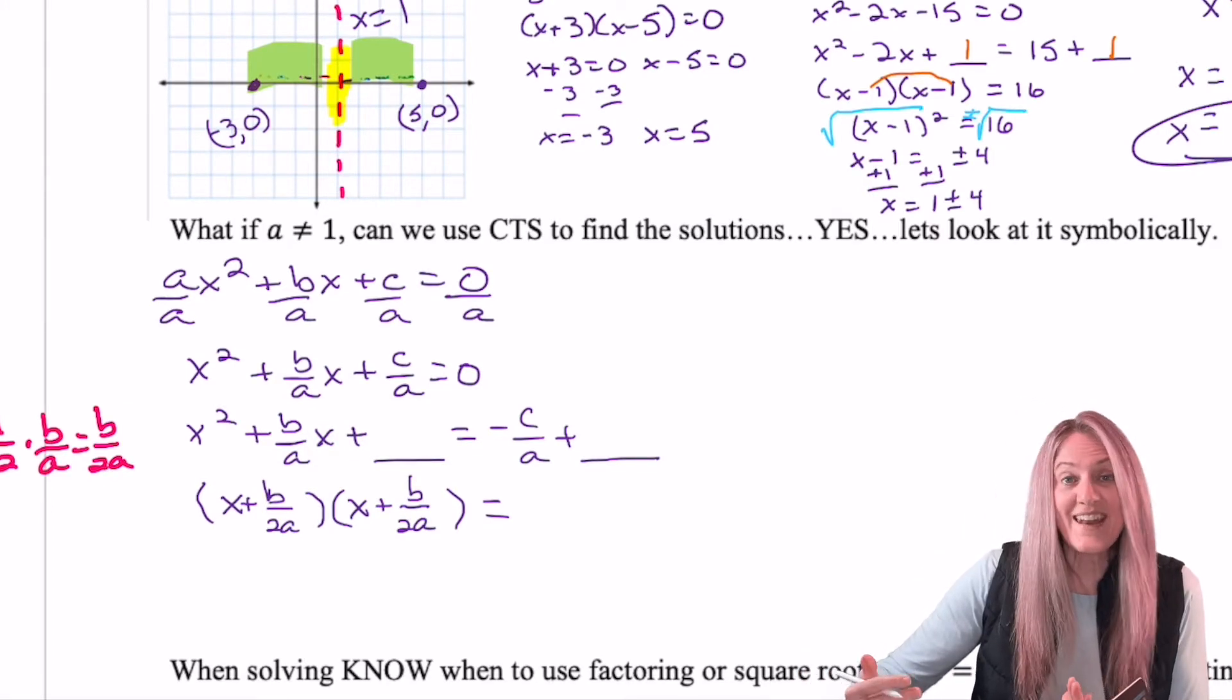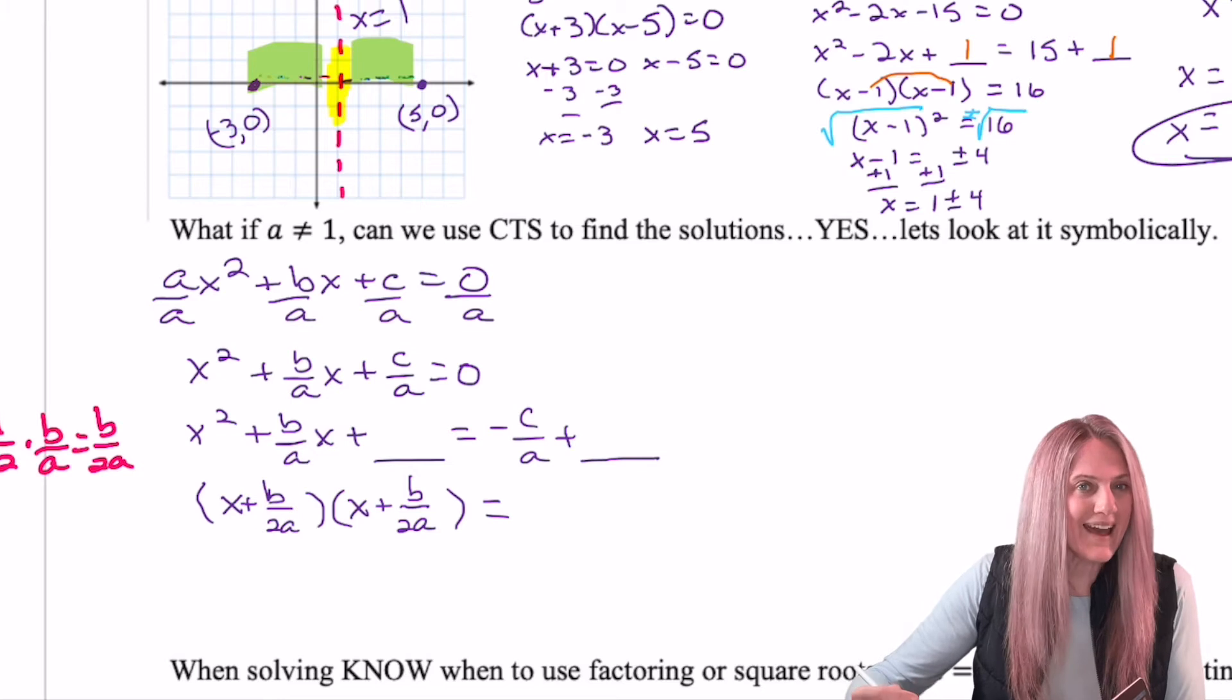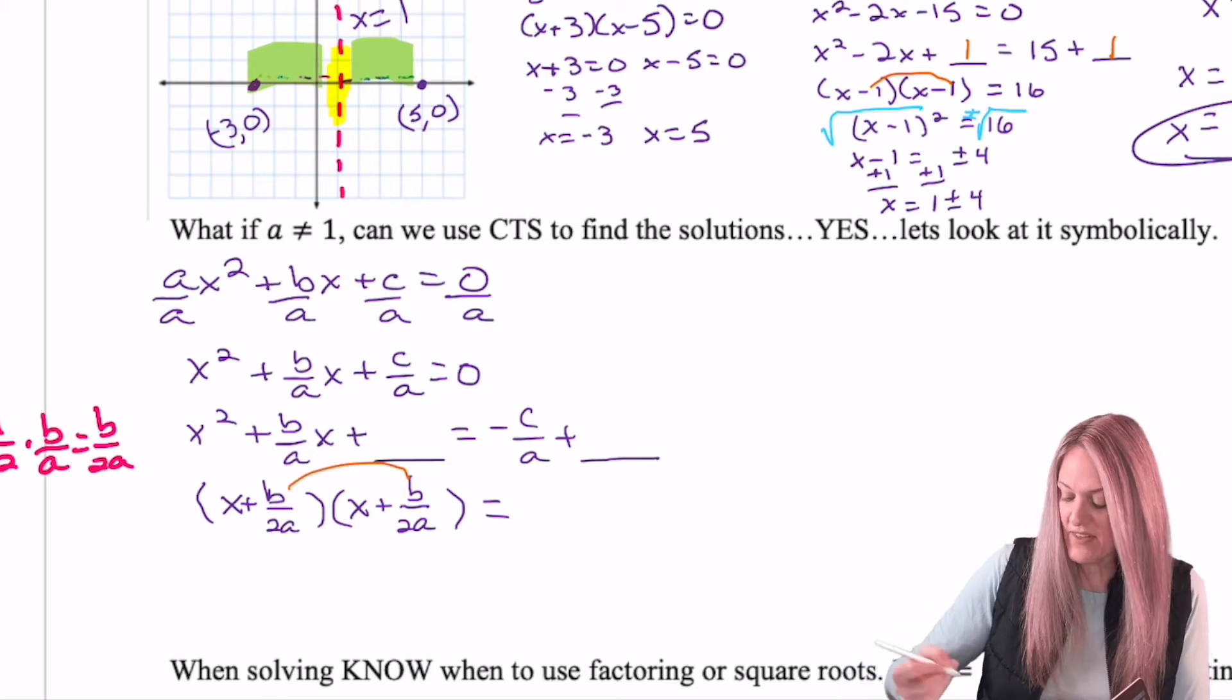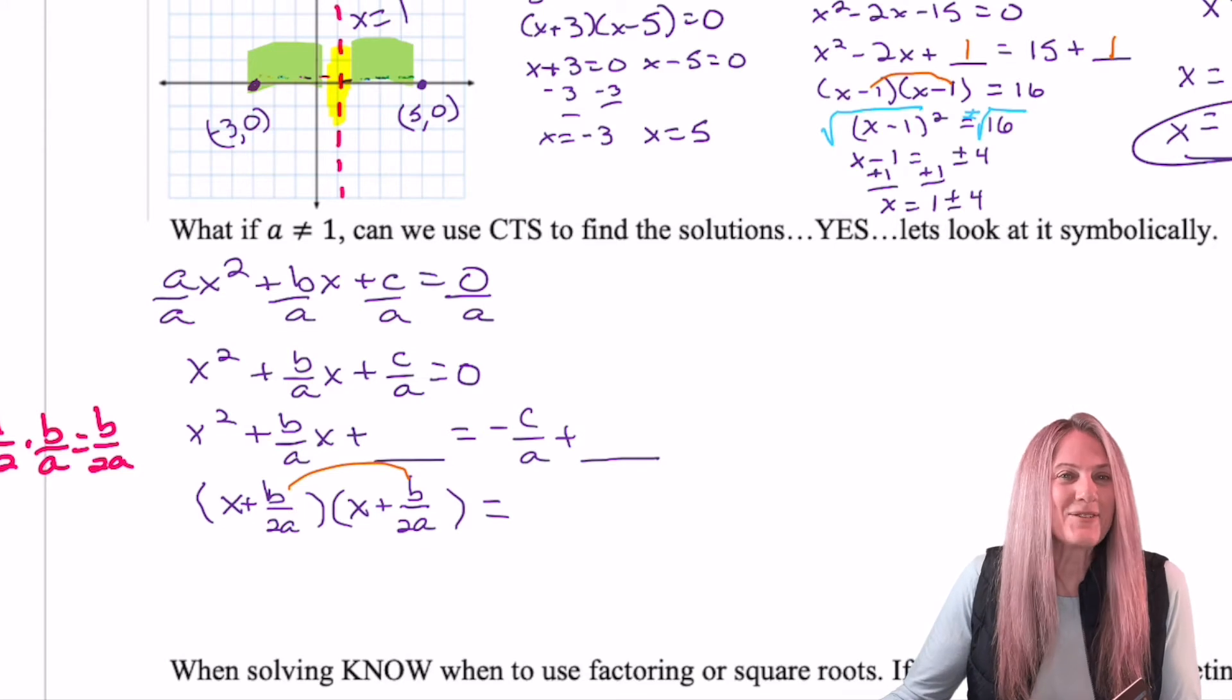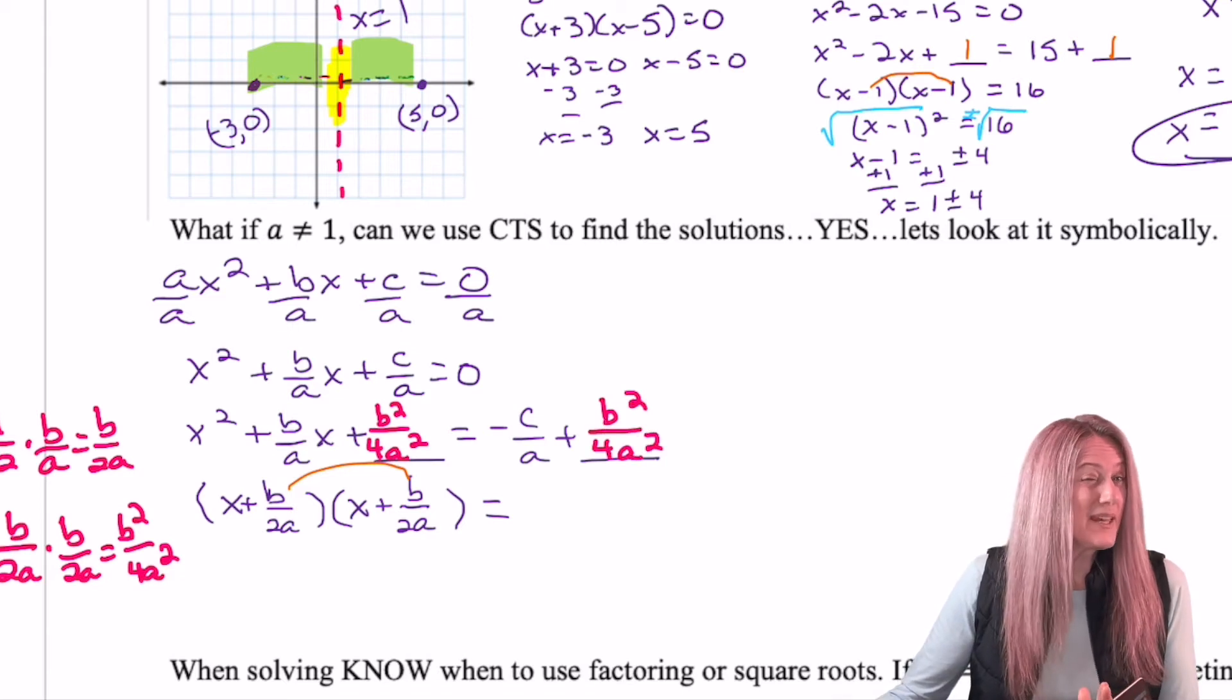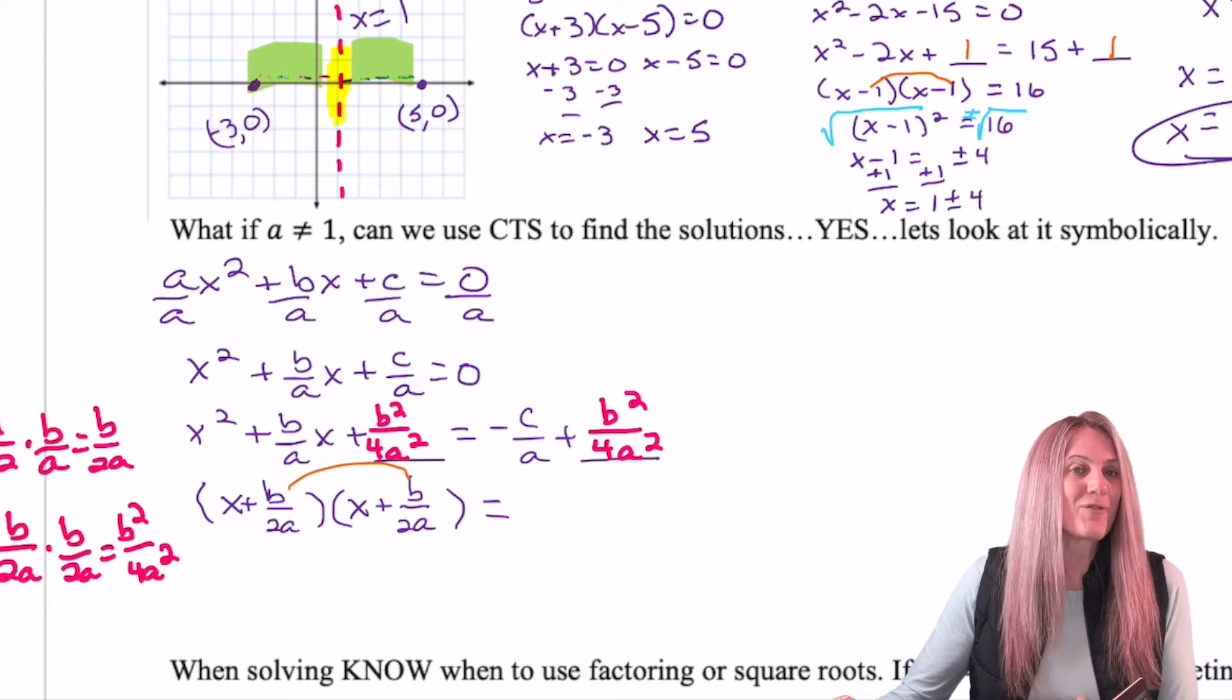So far so good. Now we have to determine what are we adding to both sides. Well, remember that we always multiplied these together. So b divided by 2a times itself. Okay, so if you're understanding now that I did b divided by 2a times itself to get b squared over 4a squared, you're doing fabulous.